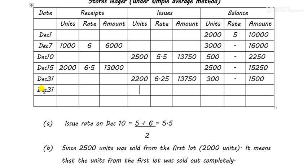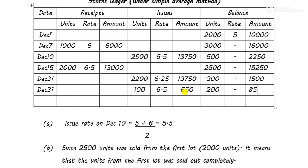On December 31, a shortage of 100 units was also found. We treat this as abnormal loss. The rate for abnormal loss will be of the latest goods, which is ₹6.5 — because the lot at ₹6 was completely sold out on December 31, leaving only the lot at ₹6.5. So 100 units × ₹6.5 = ₹650. The final balance is 200 units, no rate, and amount ₹850.